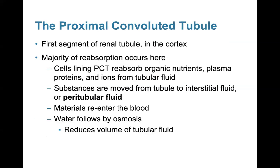The first segment is the proximal convoluted tubule, where the majority of reabsorption occurs. Cells lining the PCT reabsorb organic nutrients, plasma proteins, and ions from tubular fluid. Substances move from the tubule to the interstitial or peritubular fluid, materials reenter the blood, and water flows by osmosis, reducing the volume of tubular fluid.